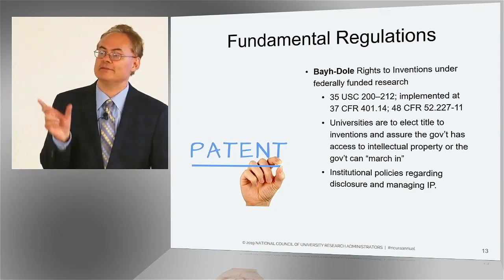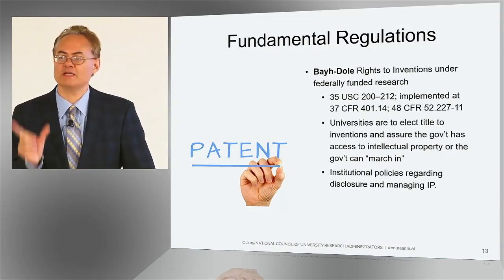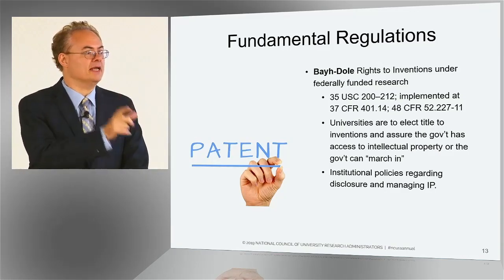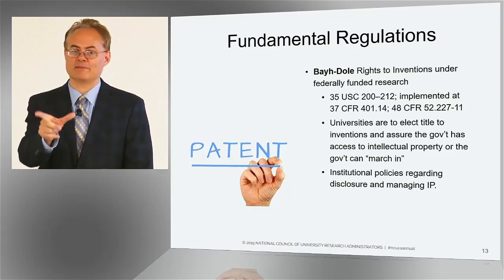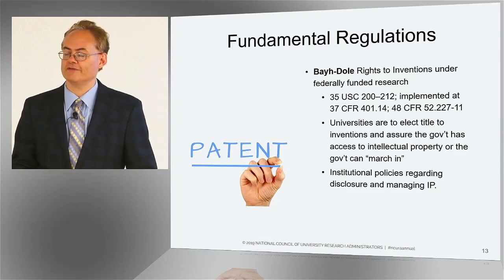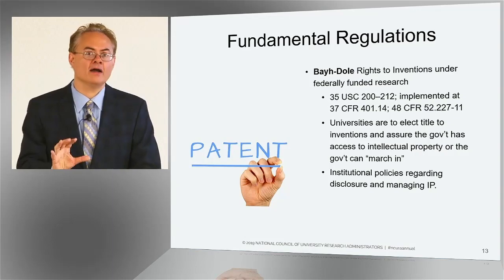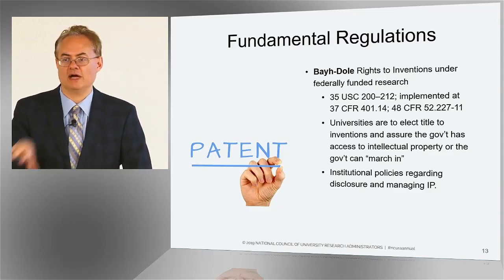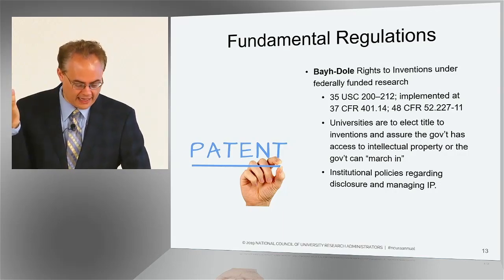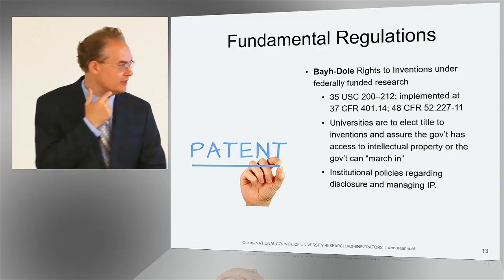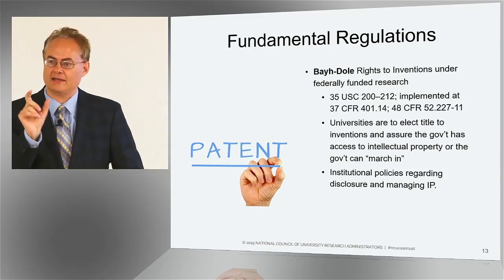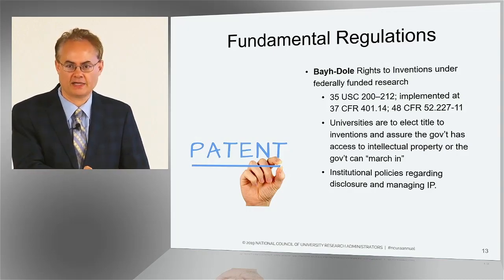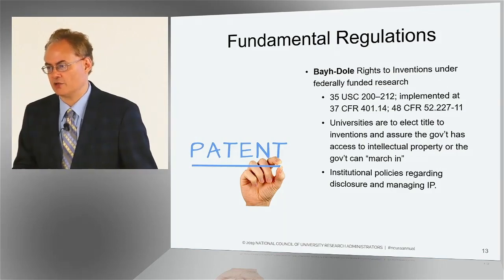G1 is really important when you're the recipient of a federal subcontract. When the federal government is giving money to a big private company, and then the private company turns around and issues a sub to your university, what the company will then do is say we expect you to assign all of your intellectual property to us, the big company. That's when I point to G1 — it's right in there that the contractor will not, as part of consideration for issuing a subcontract, gain rights in the subcontractor's intellectual property.